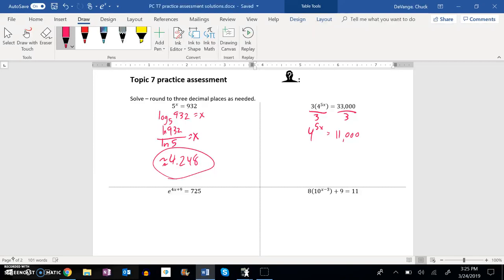So now I'm going to rewrite it as a log statement. I know that log base 4 of 11,000 then would equal 5X, and to solve for X here, I divide everything by 5, or multiply this by a fifth.